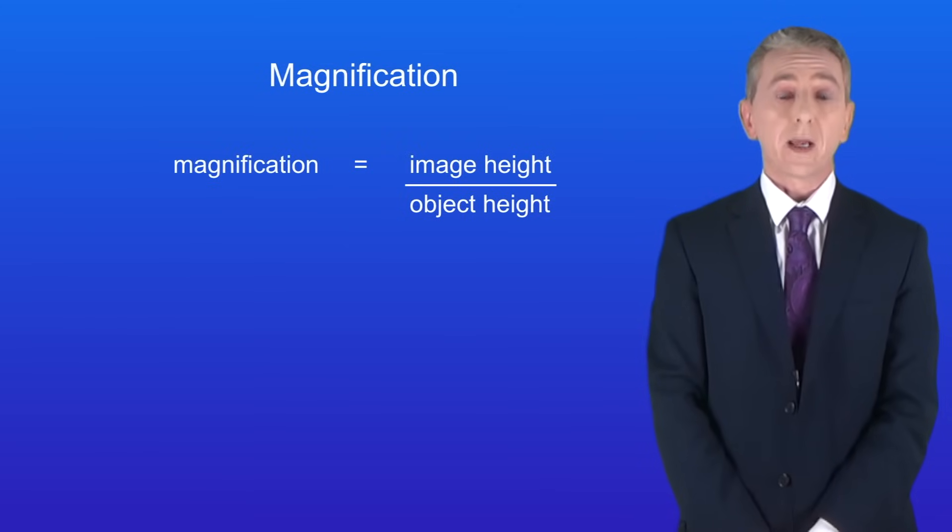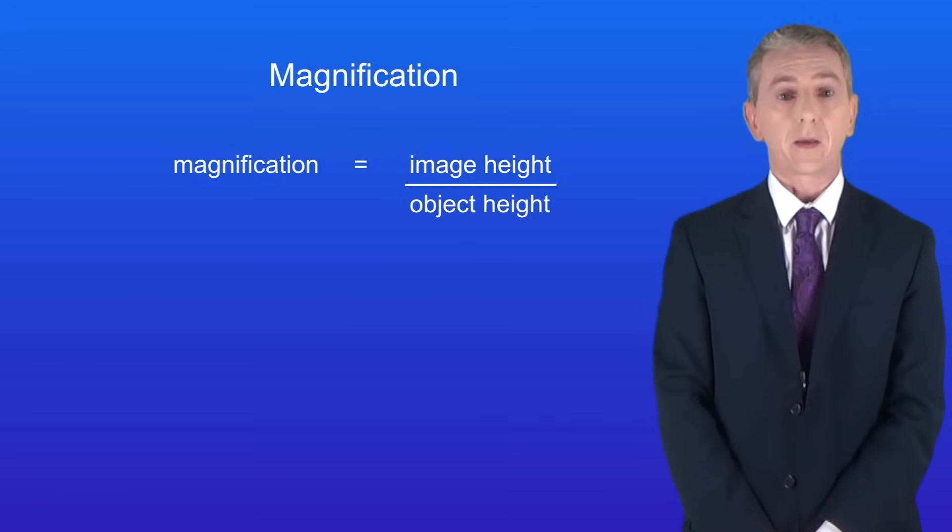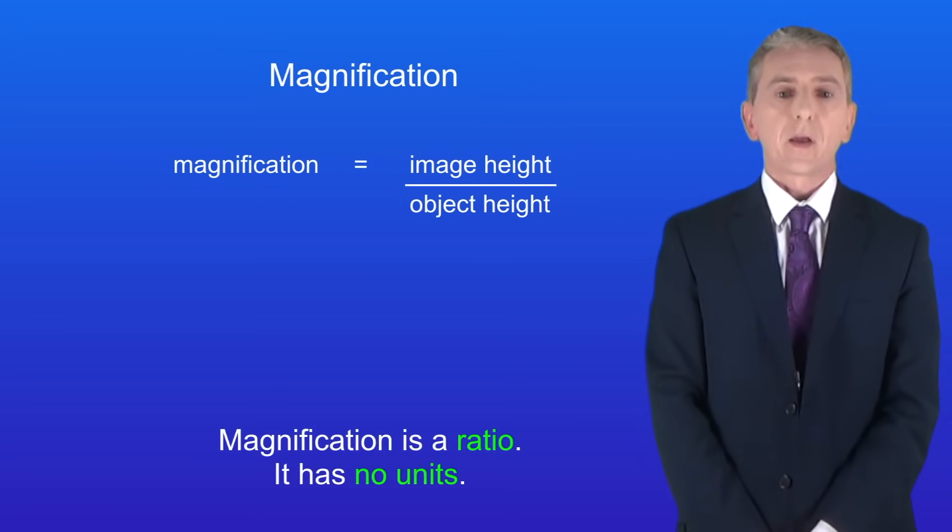Okay now in your exam you could be asked to calculate the magnification of a lens. To do that we use this equation and you are given this in the exam so you don't need to learn it. The magnification equals the image height divided by the object height. And remember that magnification is a ratio so it's got no units.